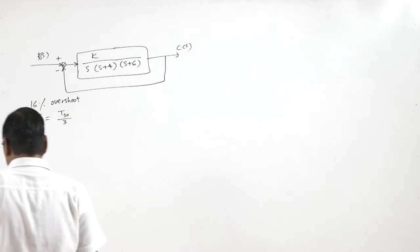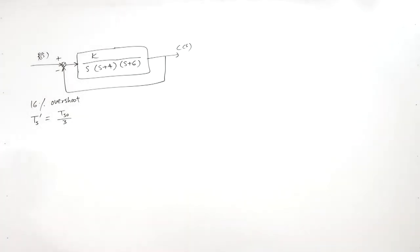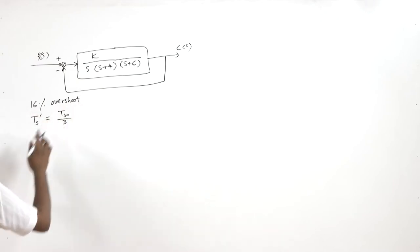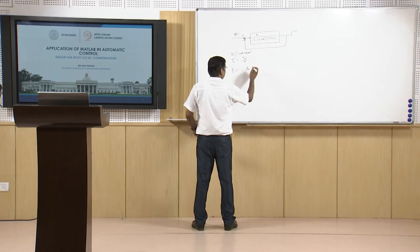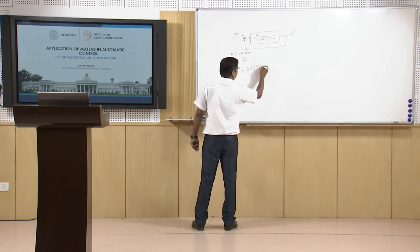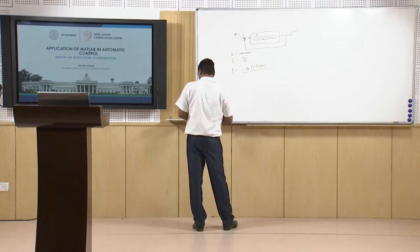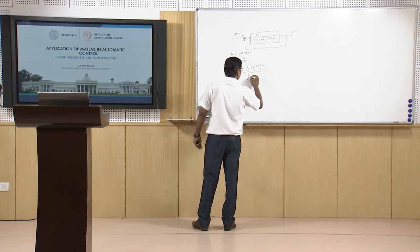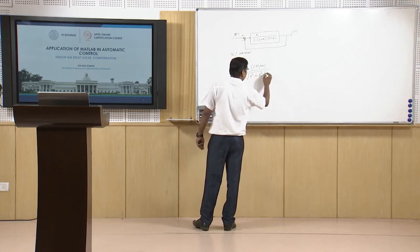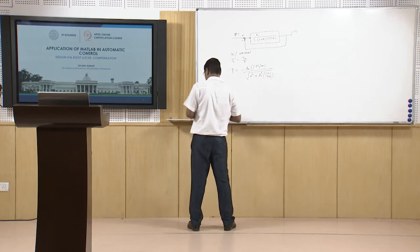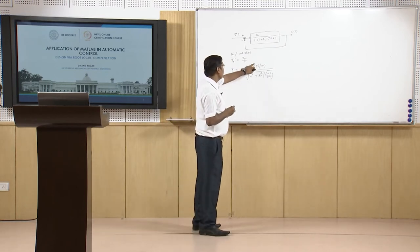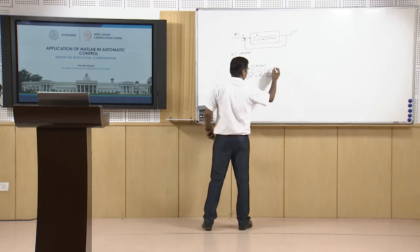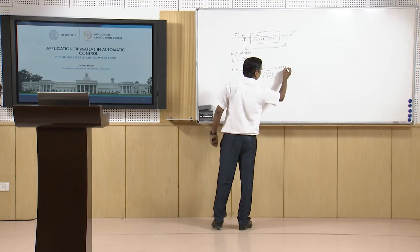First we calculate the damping ratio corresponding to this overshoot. We know that damping zeta equals minus ln(percent overshoot / 100) divided by the square root of pi squared plus ln squared of (percent overshoot / 100). When we substitute percent overshoot equal to 16, we get a damping ratio of 0.504.